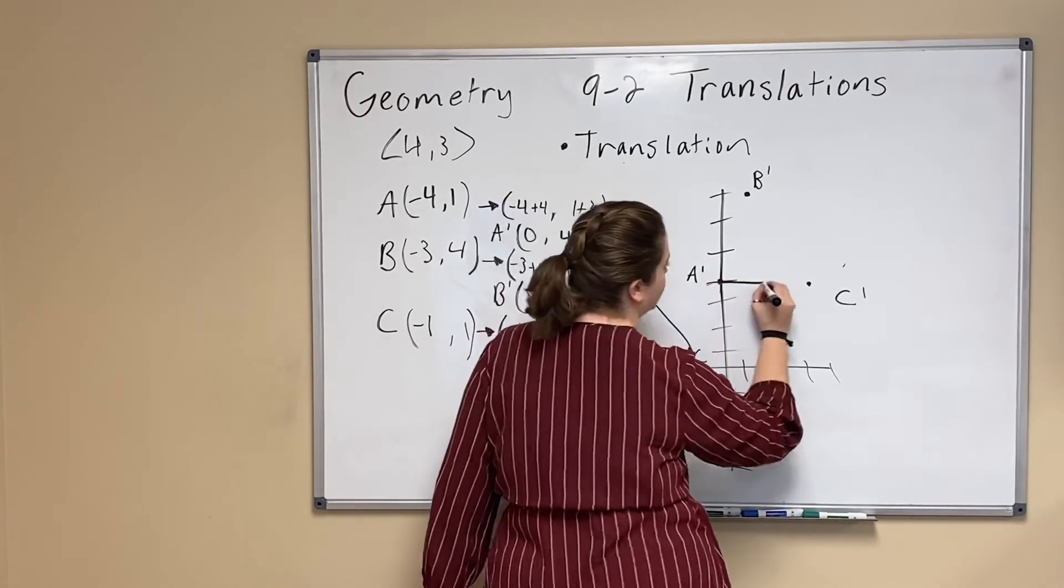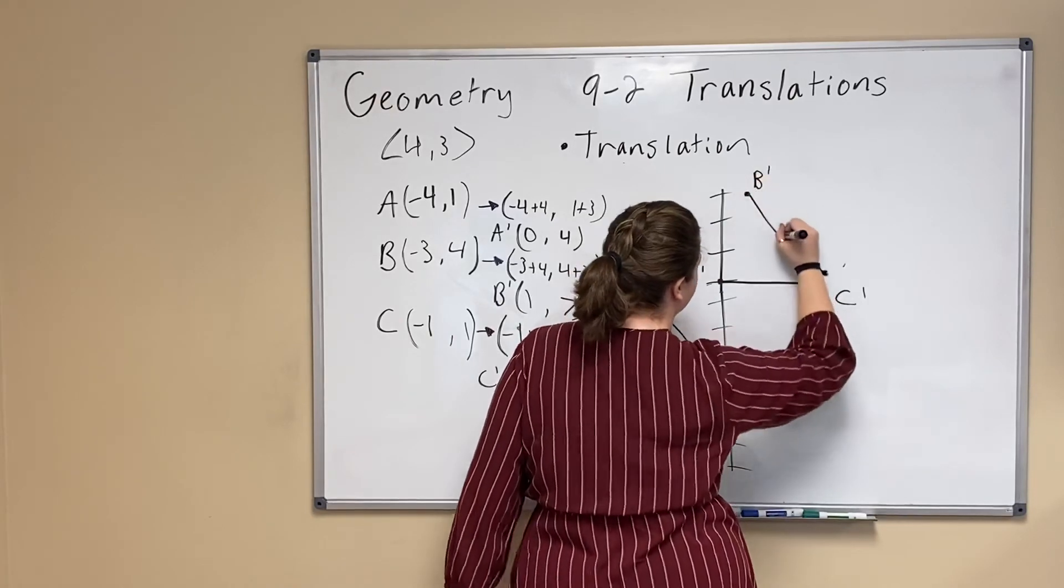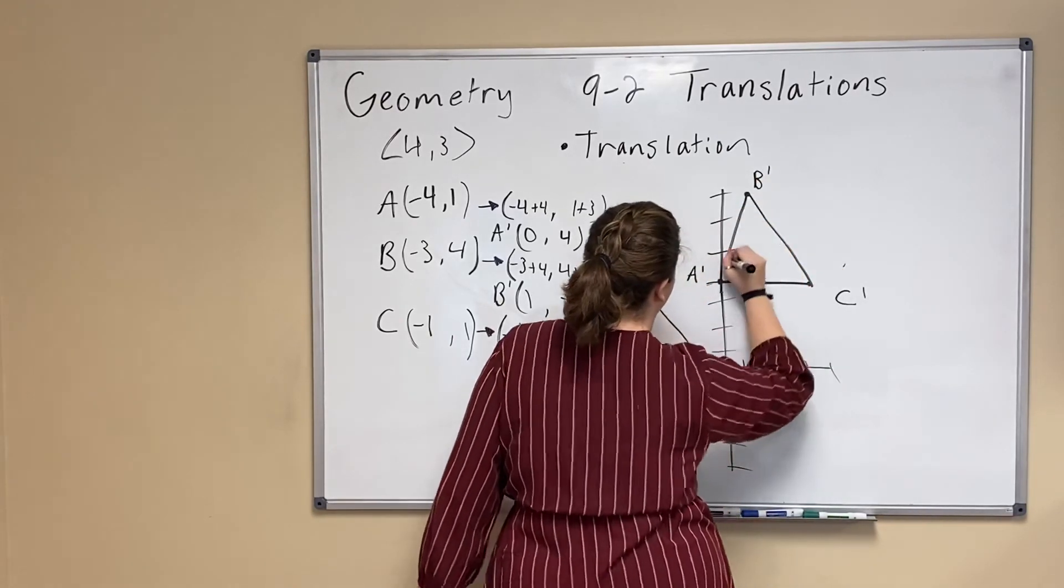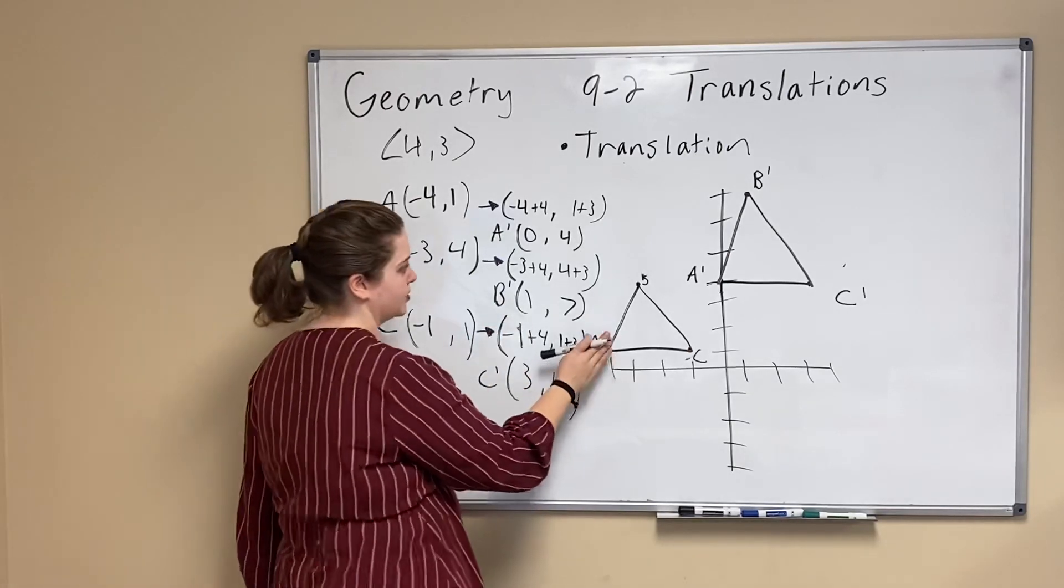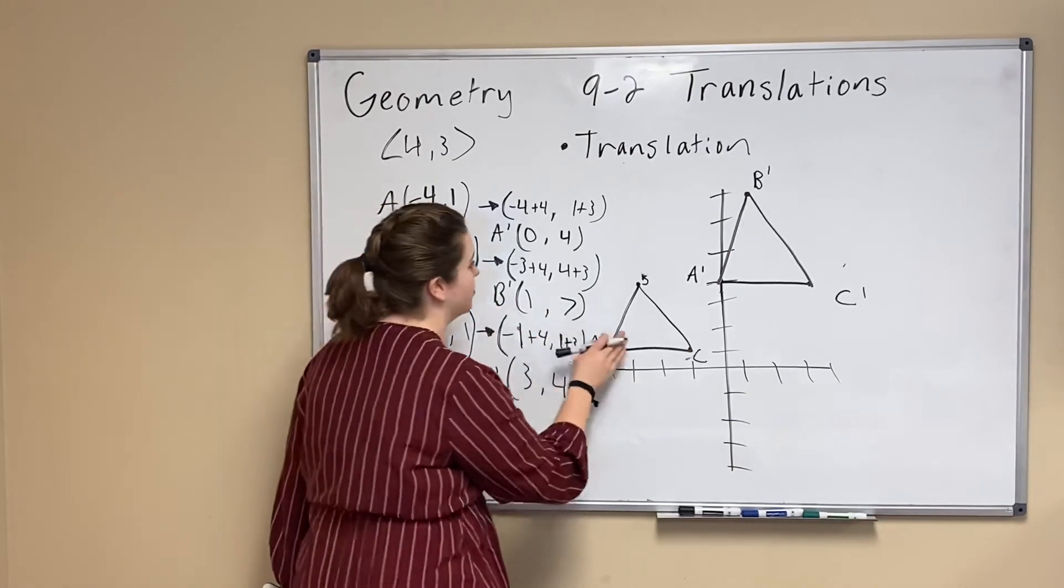So here's our new triangle. We've taken our old triangle and translated it along the vector <4,3>.